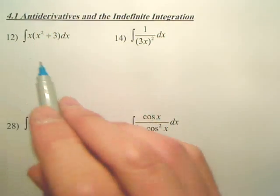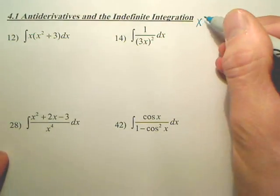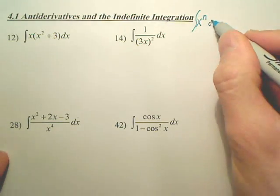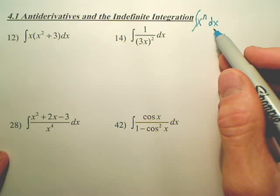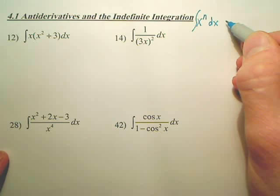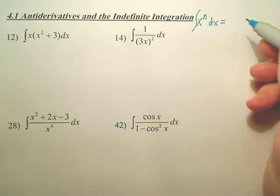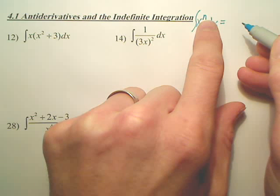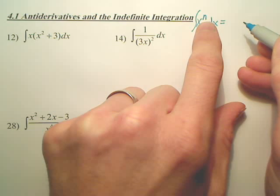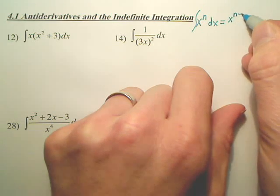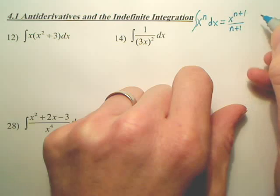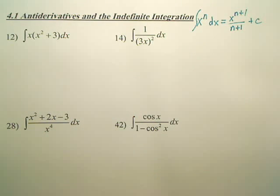If we want to integrate this, first we have to think about the rule, which is not on your form. If you have the integral of x to the nth dx — there always is a dx because you're integrating with respect to x — basically, the answer is: when you derived, you subtracted the power and multiplied by it. Here, instead of subtracting, the opposite is to add. And the opposite of multiply by the power is divide. Then you put plus C. That is the most important integral around, and it's not on your sheet.